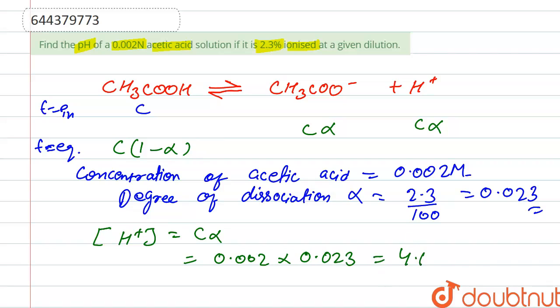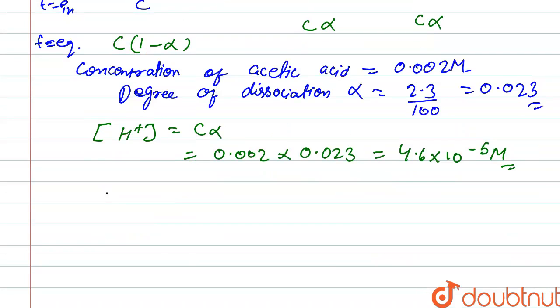We have to calculate pH. So we know that pH is equal to minus log of concentration of H+. So after solving, we get 4.3372. So this is the value of pH.